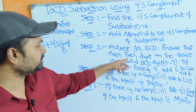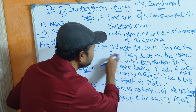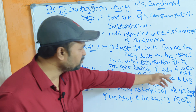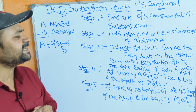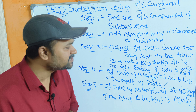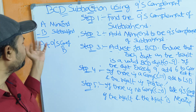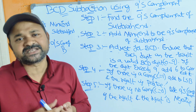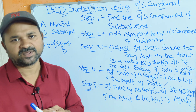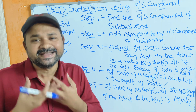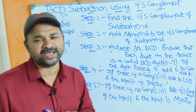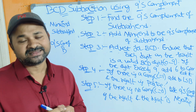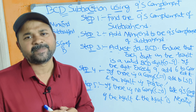Ensure that each digit in the result is a valid BCD digit, that is from 0 to 9. If the digit exceeds 9, add 6 to correct it. So after performing the BCD addition we have to check whether the resultant digits are in BCD or not. We have 10 BCD digits from 0 to 9. Suppose if we get a number larger than 9, we have to correct it by adding 6.